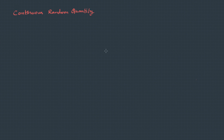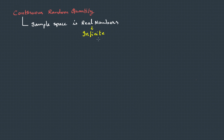Continuous random quantity. Here, the sample space is real numbers, so practically they are infinite. When we compare this with discrete random quantities, there we had only finite quantities. But in continuous, we deal with real numbers, therefore they are infinite.